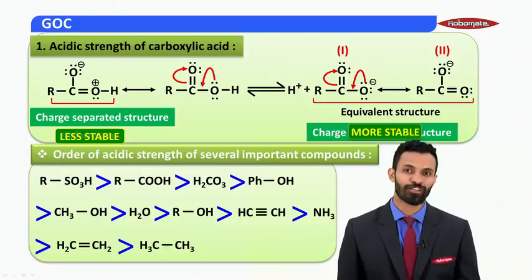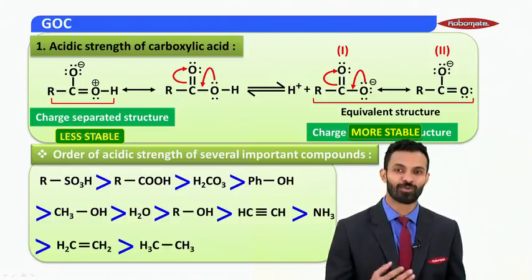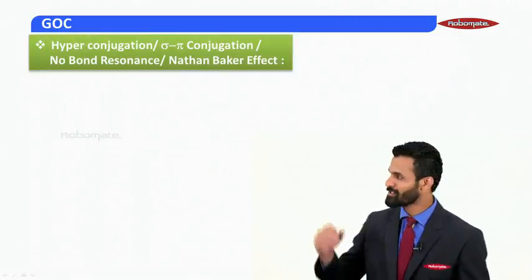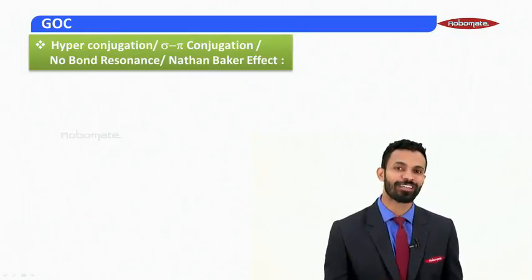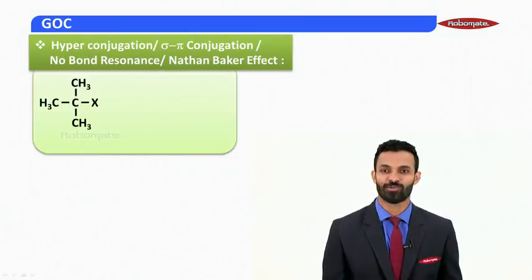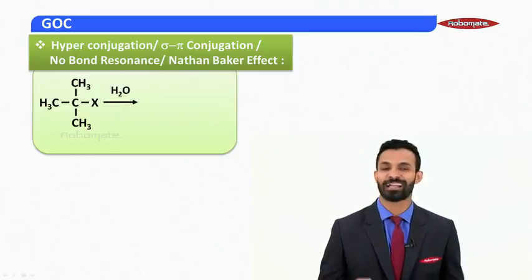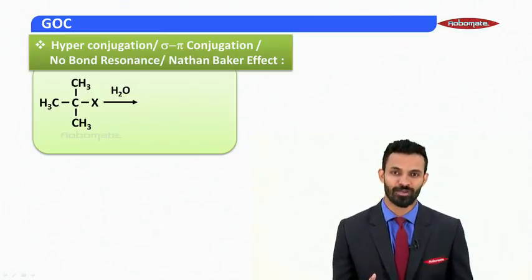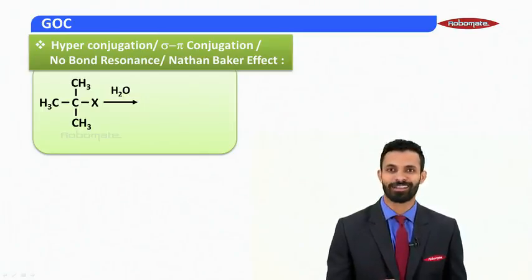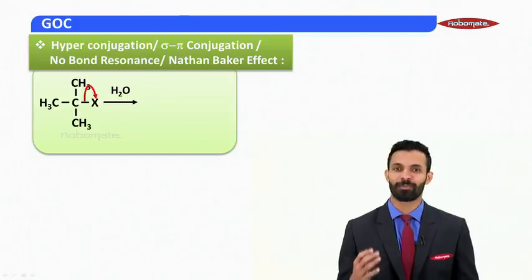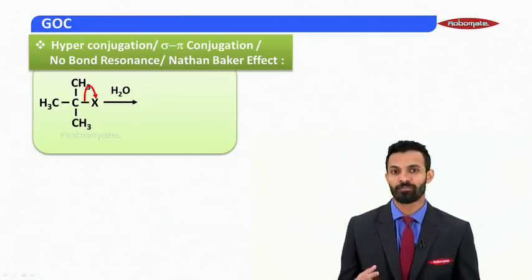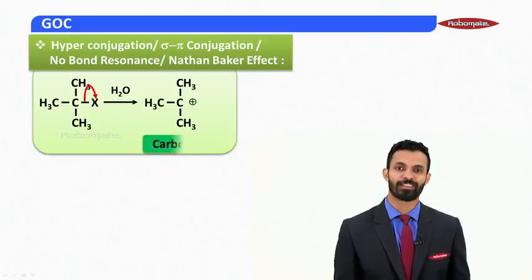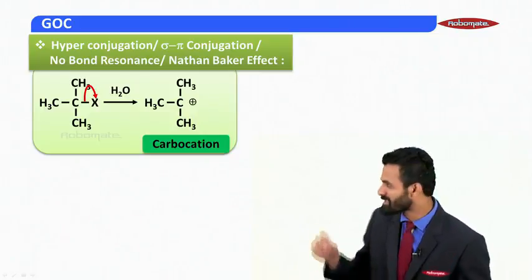Now we move to the introduction of the phenomena of hyperconjugation. Let's look at this reaction: tertiary butyl halide, when brought in the presence of a polar solvent like water, undergoes heterolytic C–X bond cleavage. The bond pair between C and X is completely taken by X, so the carbon loses the bond pair and produces a positively charged species — a carbocation.